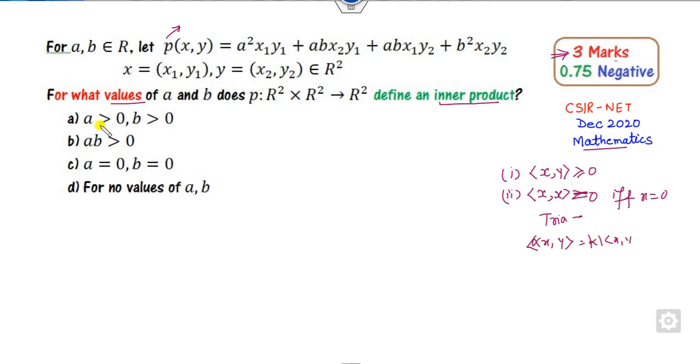Look at the options—they're talking about a and b equal to zero. Let's consider what happens if a = 0. If you look at this function p(x,y), when a = 0, these parts become zero. Now check the first property: is it always greater than or equal to zero? No.